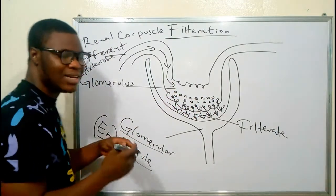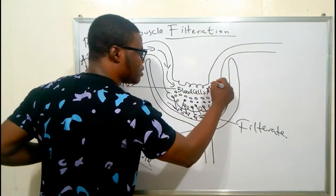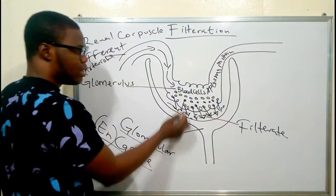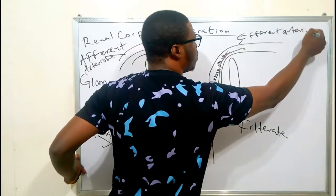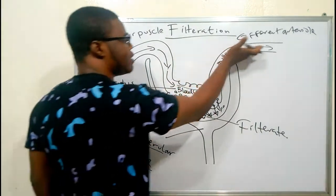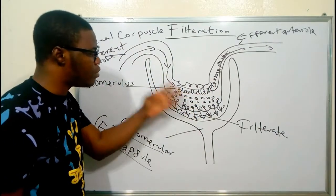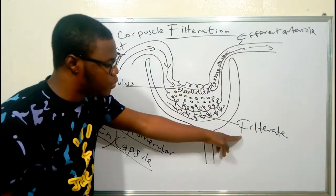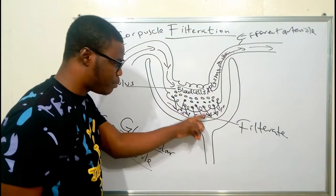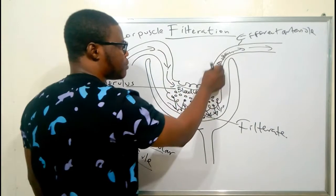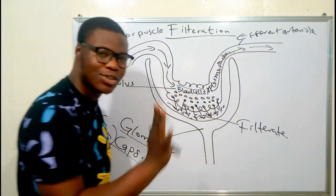Blood cells and plasma proteins cannot pass through the pores of the glomerulus — they move out through the efferent arteriole. Quick recap: blood from the afferent arteriole is conveyed to the glomerulus, which as a fenestrated capillary bed allows filtrate — substances of small molecular size — to escape into the Bowman capsule. Blood cells and plasma proteins are conveyed away through the efferent arteriole back into the bloodstream.